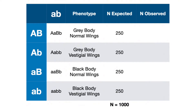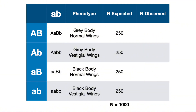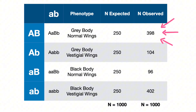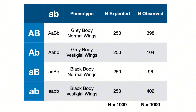Supposing we reared 1,000 baby fruit flies, under independent assortment we would expect each phenotype at about 25%, or 250 individuals each. However, if the genes are linked, that won't happen. What we observe in our table is that gray body with normal wings is overrepresented at 398, and black body with vestigial wings at the bottom is overrepresented at 402. The offspring resulting from recombination of genes A and B are heavily underrepresented at 104 and 96.